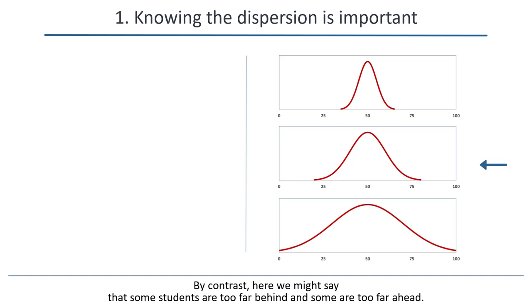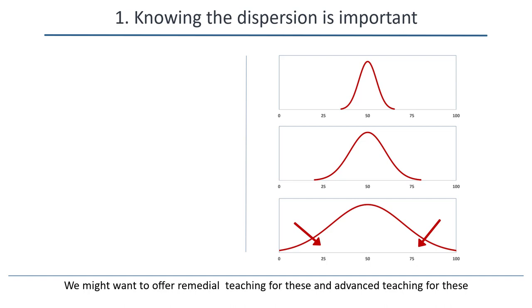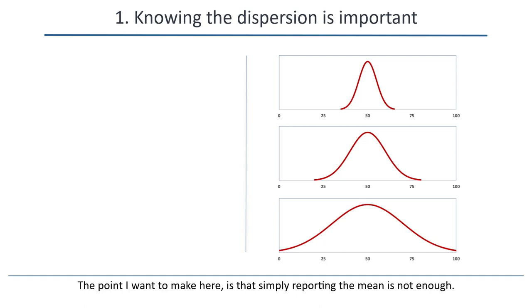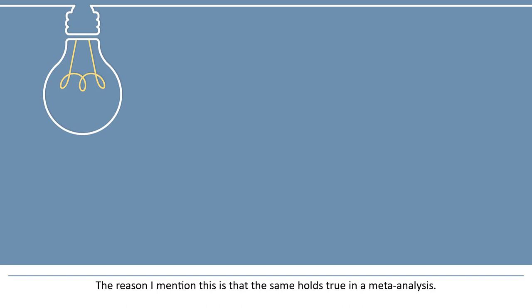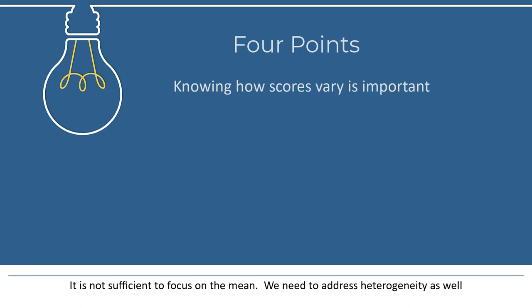By contrast, here we might say that some students are too far behind and some are too far ahead. We might want to offer remedial teaching for these and advanced teaching for these. The point I want to make is that simply reporting the mean is not enough. We need to also know how widely the scores vary, and we need that in a format that actually gives us the numbers. The same holds true in a meta-analysis: it's not sufficient to focus on the mean; we need to address heterogeneity as well.